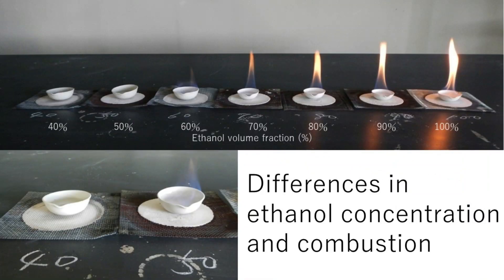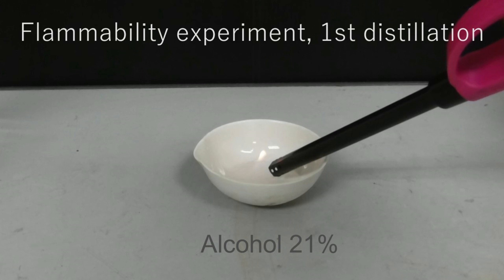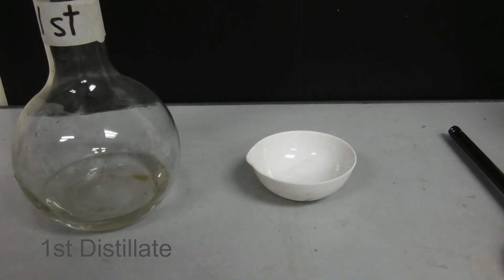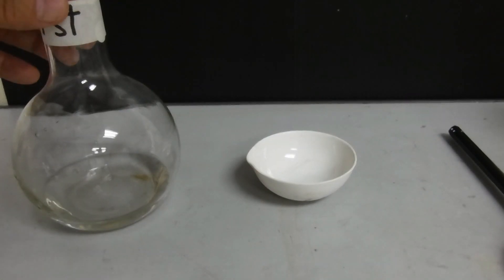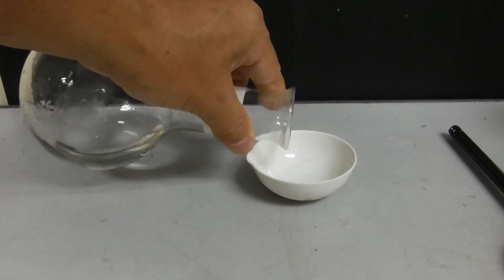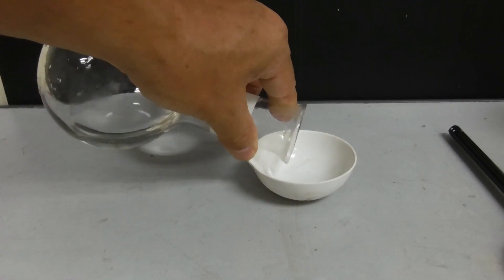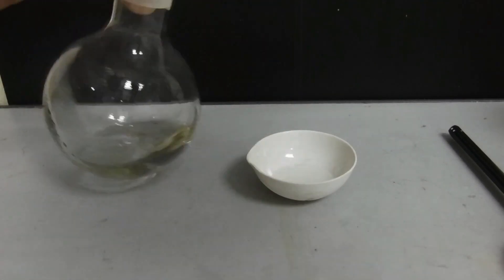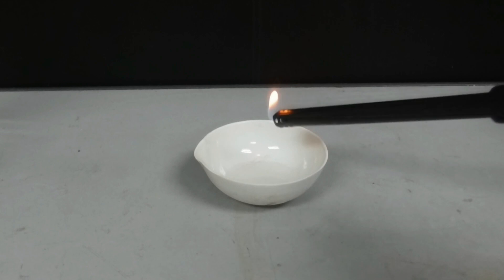The picture shows the ethanol concentration at which the solution burns. Let's ignite the first distilled solution. Ethanol solution does not burn unless it exceeds 40%, so it did not catch fire.